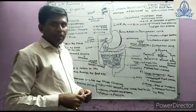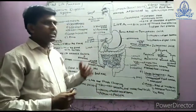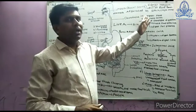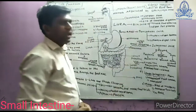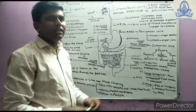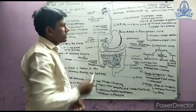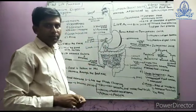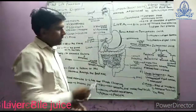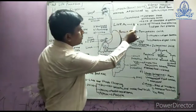The small intestine is a very important part of the digestive system because digestion is completed here. It is the largest part of the alimentary canal and is the site for complete digestion. When the food enters the small intestine, the liver and pancreas secrete their juices. The liver secretes bile juice and the pancreas secretes pancreatic juice.